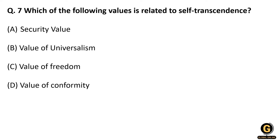The next question asks which of the following values are related to self-transcendence. Self-transcendence comes from the Theory of Basic Human Values proposed by Shalom H. Schwartz. Schwartz identified two aspects: benevolence — thinking about the welfare of people you are in direct contact with — and universalism — doing good for people across the entire world. Self-transcendence is related to the value of universalism.